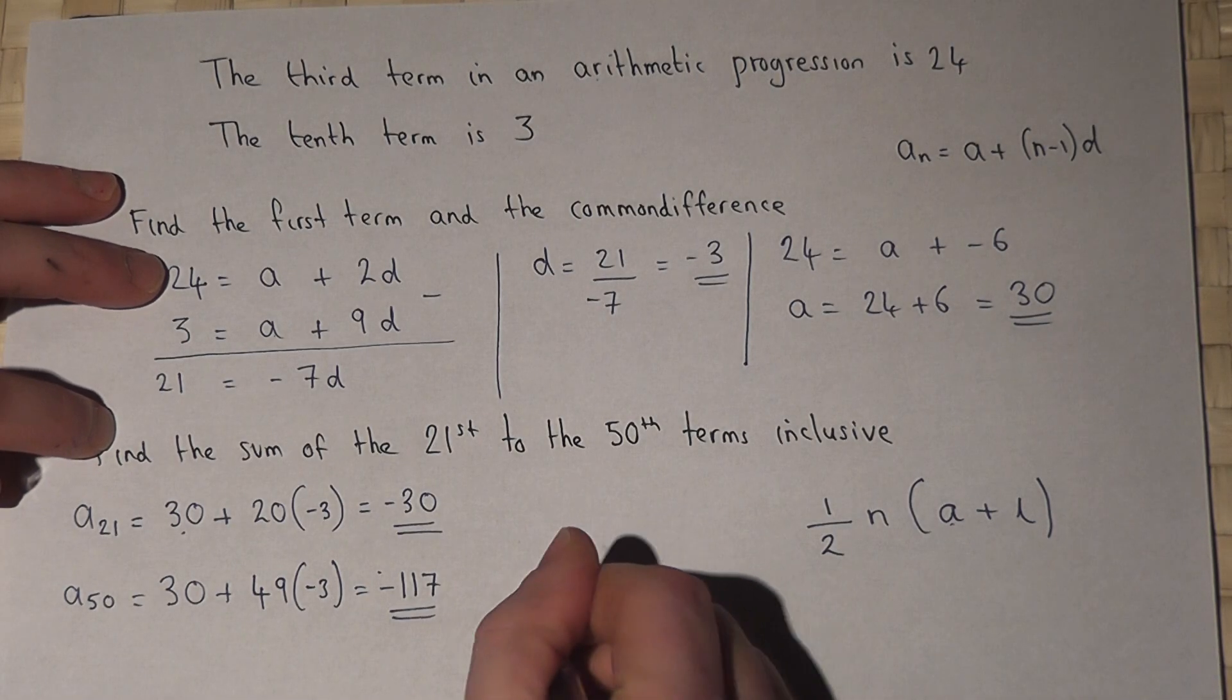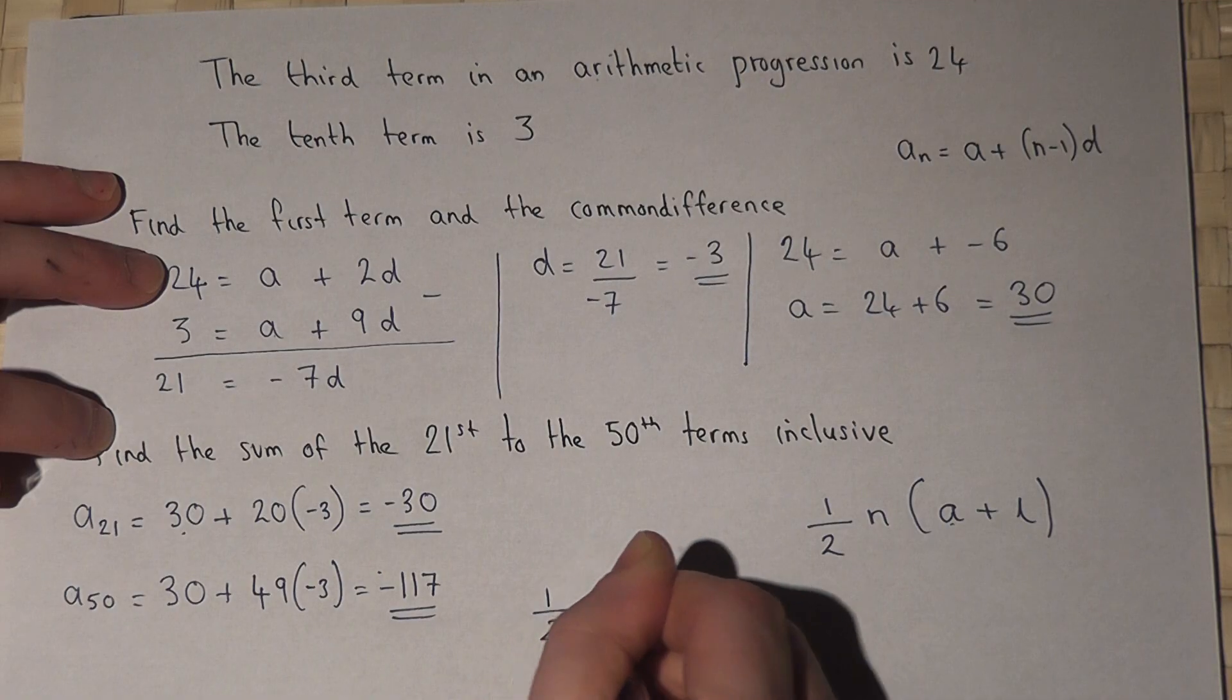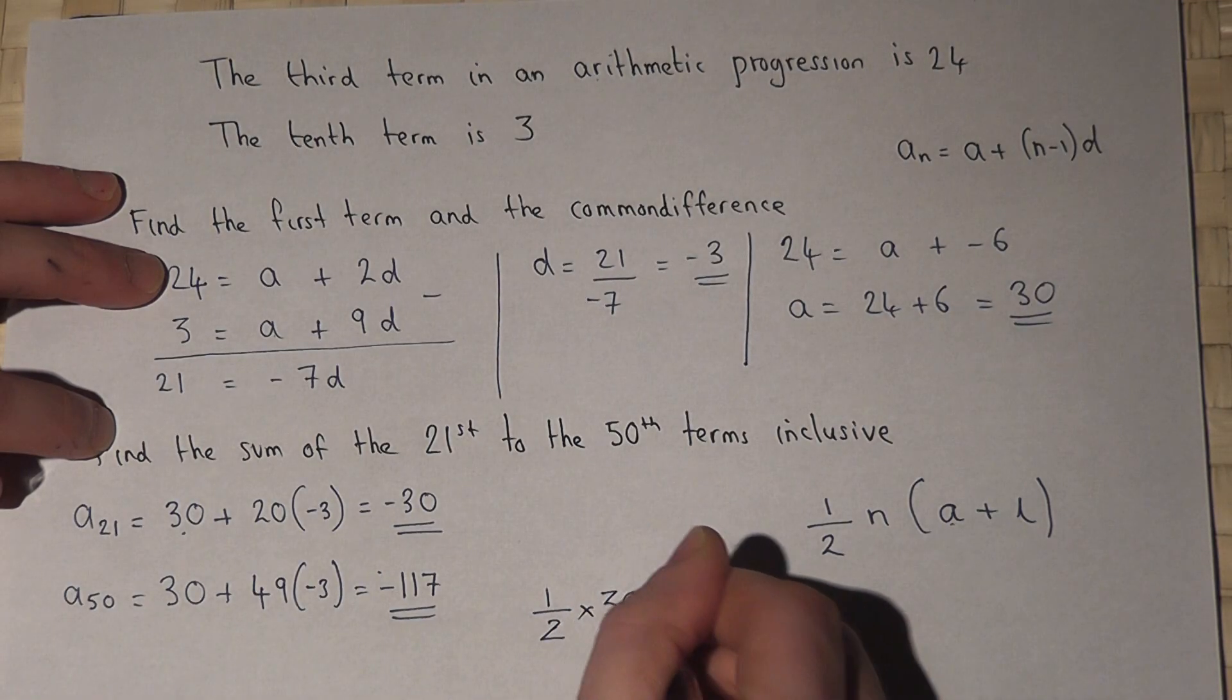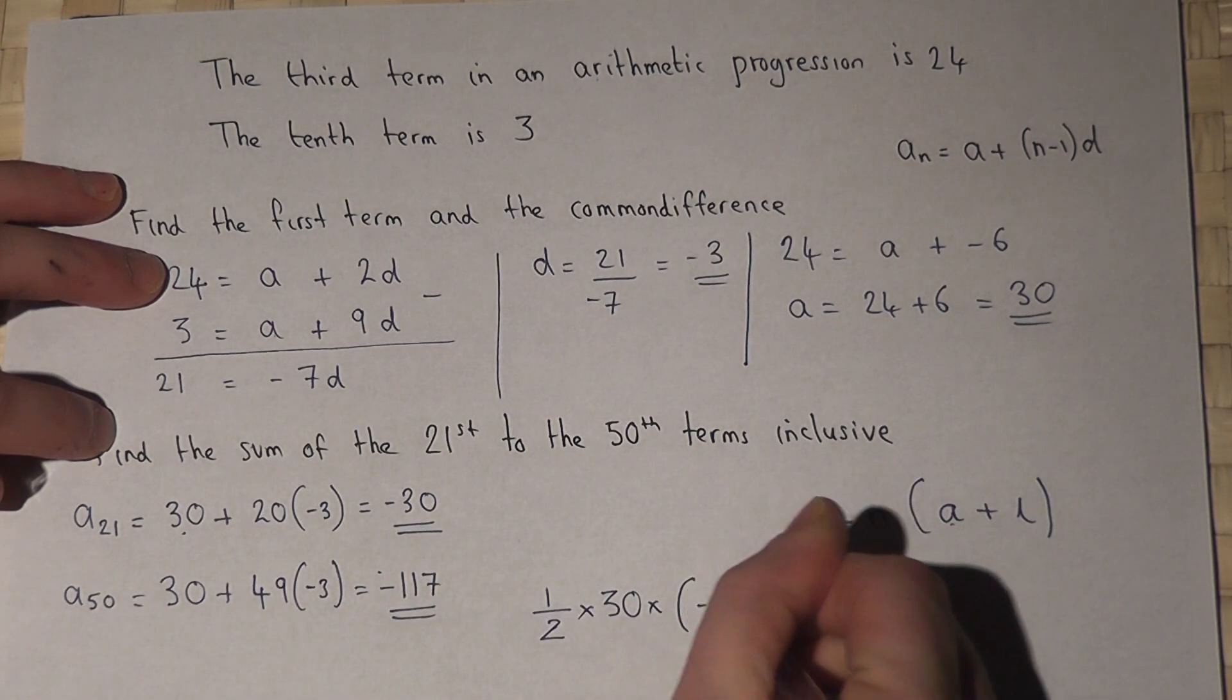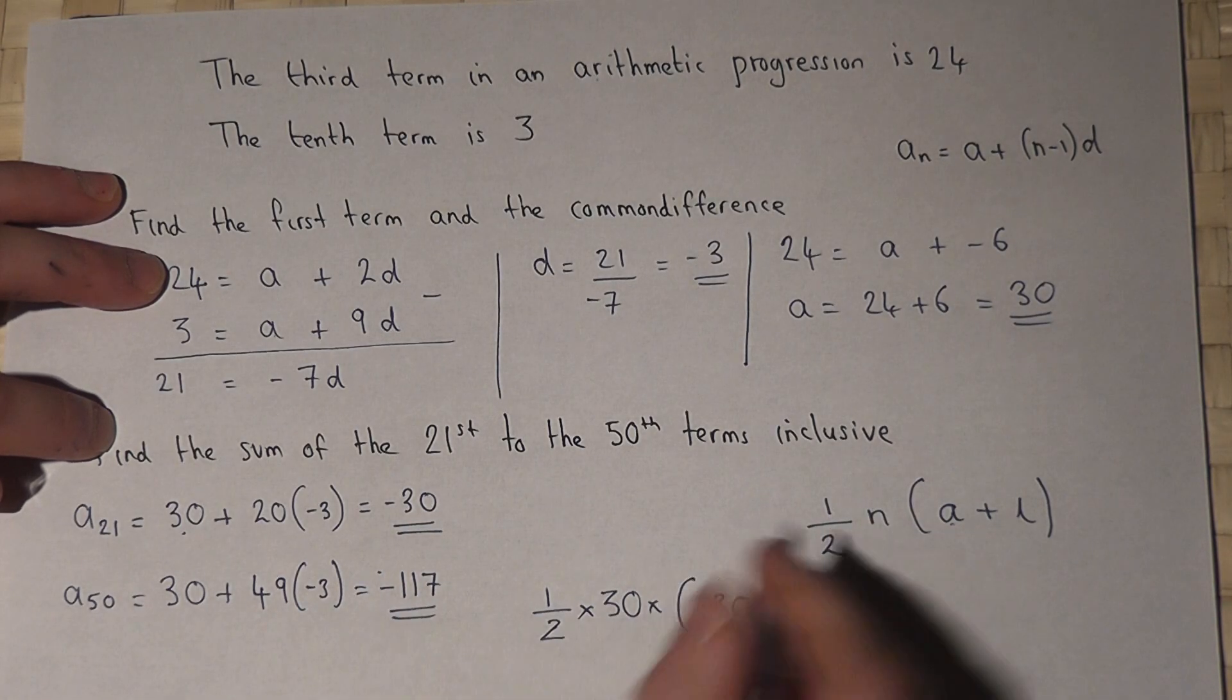So the sum is a half times 30 times by minus 30, which is the first term I want to add together, plus minus 117.